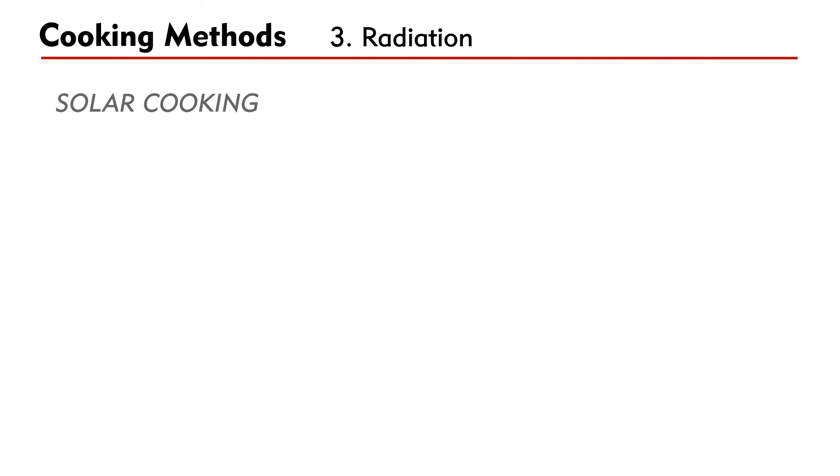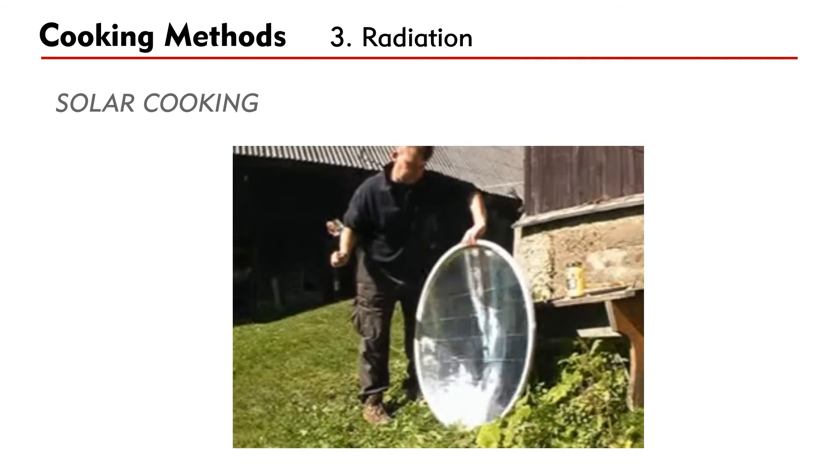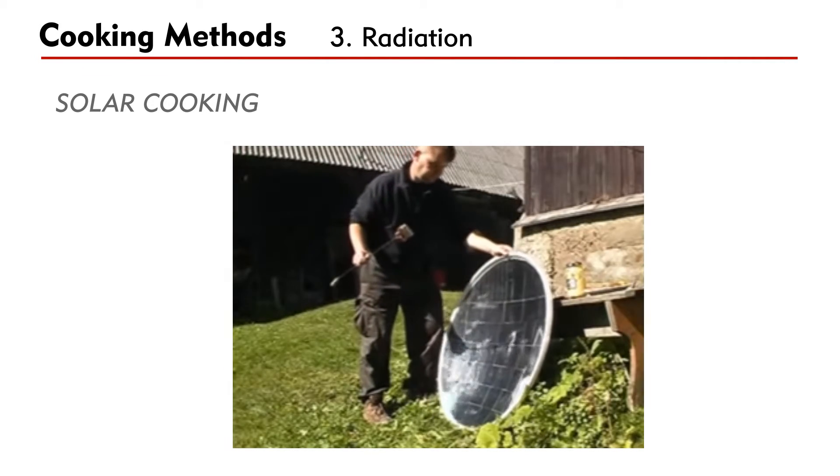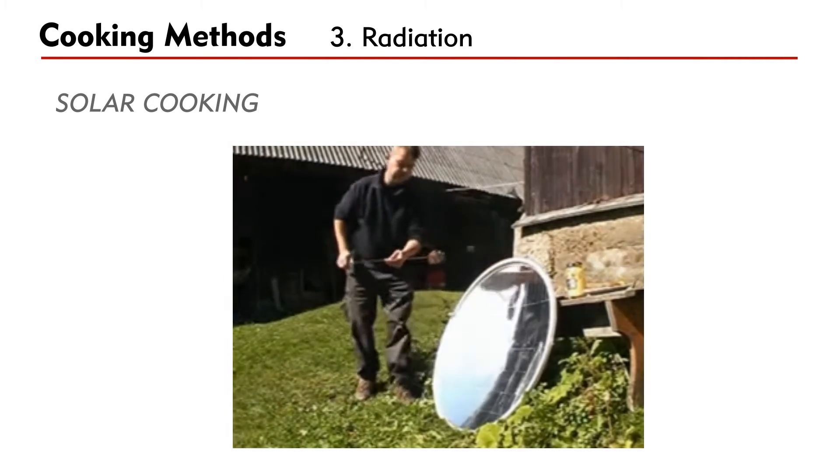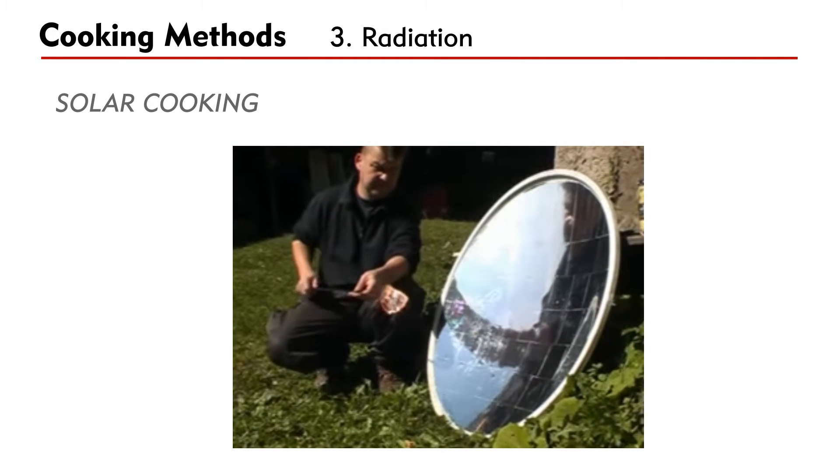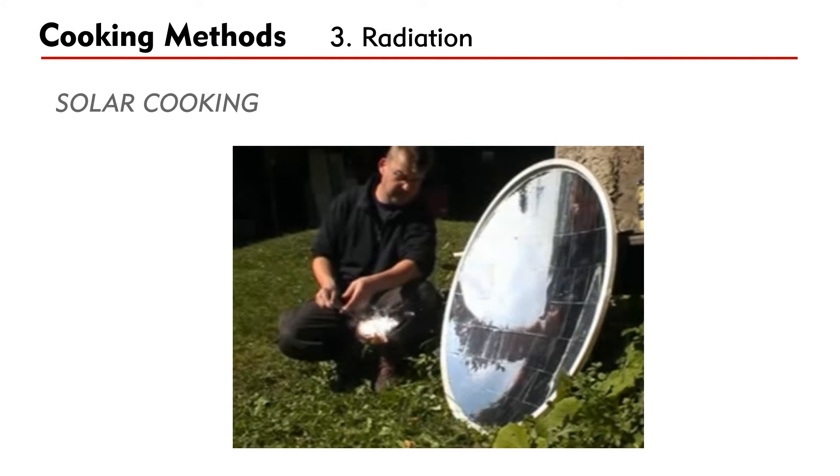Finally, solar cooking. Cooking can be done without any fuel cost by harvesting the sunlight using a concave mirror. Heat flows from the hot object, the sun, to the cold one, the food. The process is called radiation.